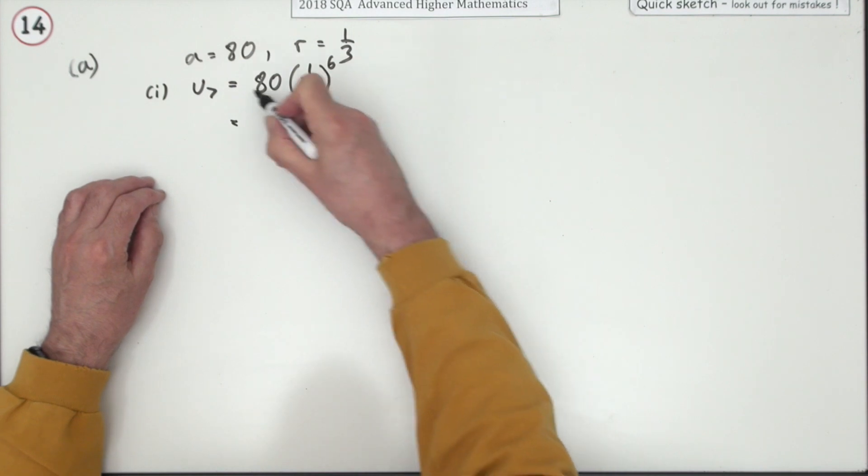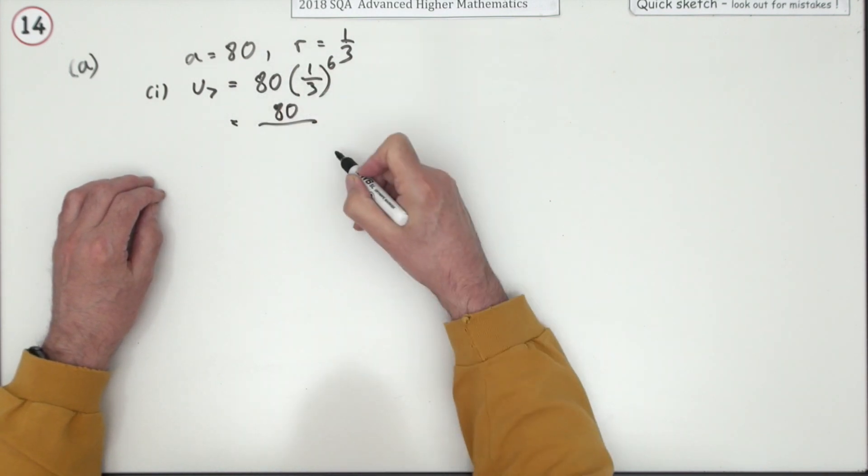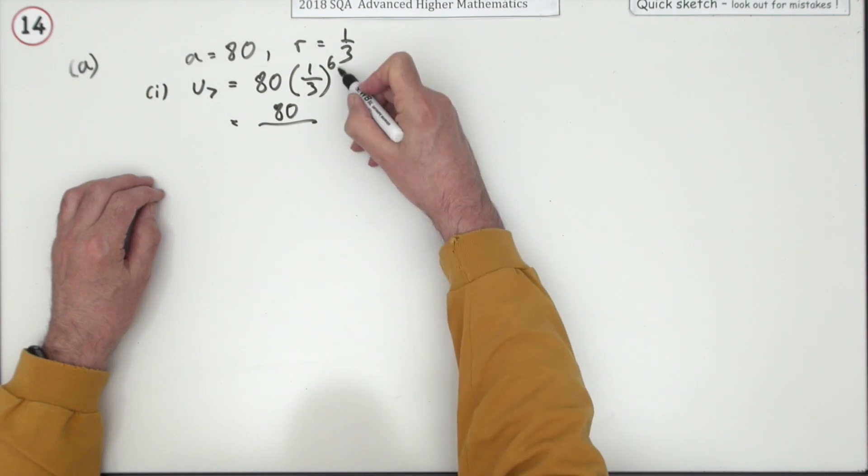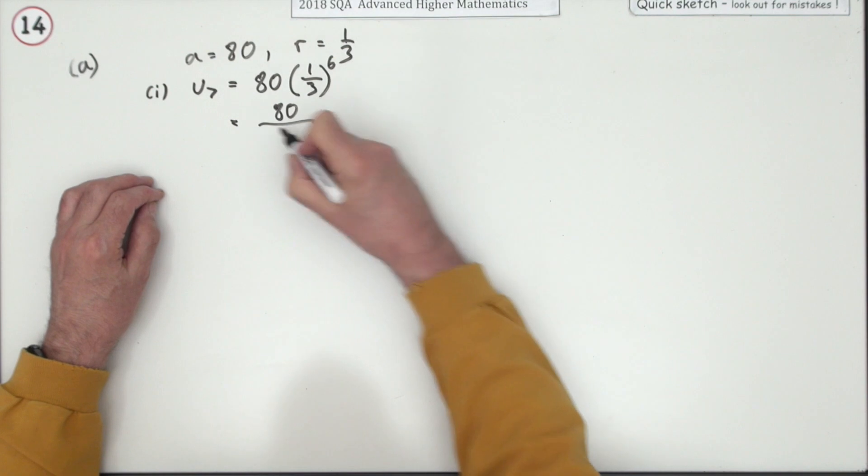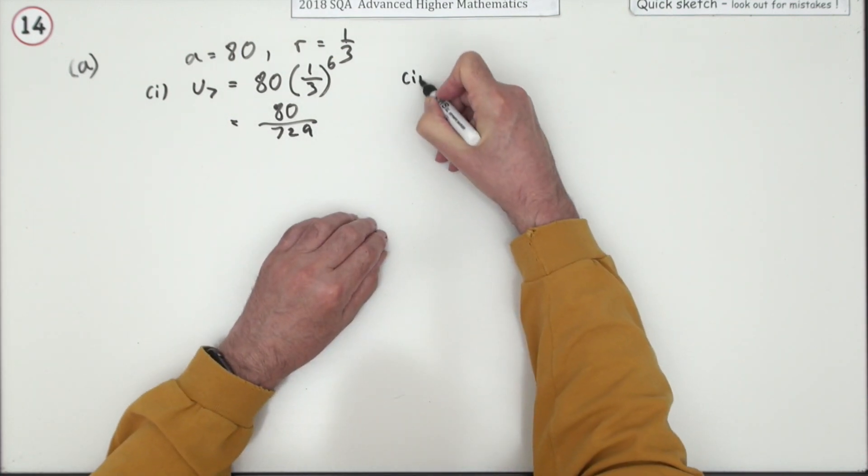Now, there's been no division there, there's no factors of 3 in 80. So, it'll be 80 over whatever 3 to the 6 is. That's 3 to the power 3 squared, 81 times 9, 729. Presumably, I'll just take that as the answer without going for a decimal.